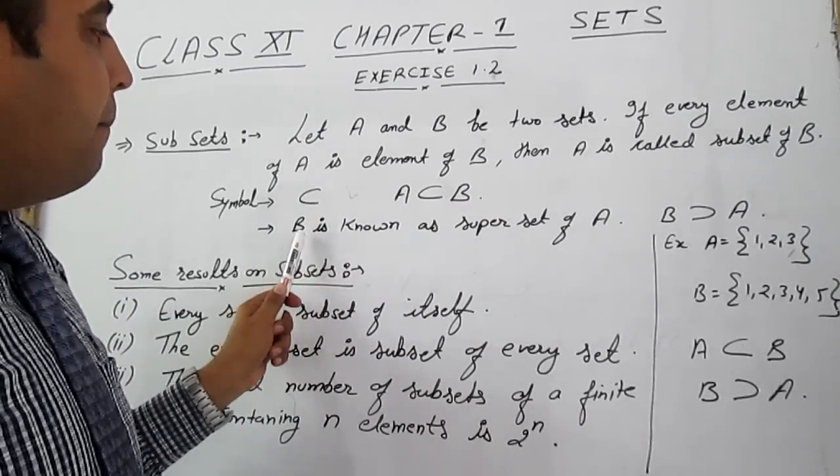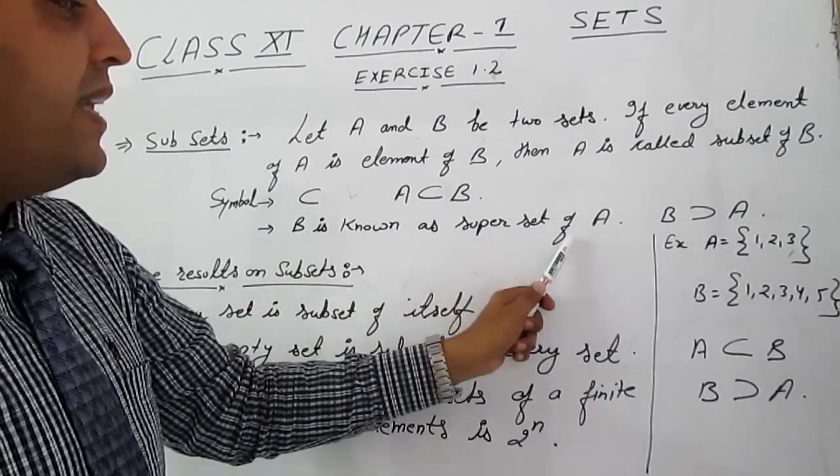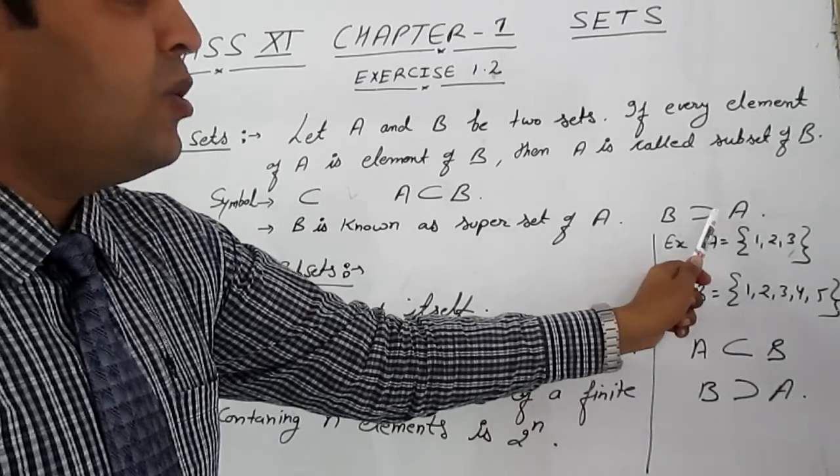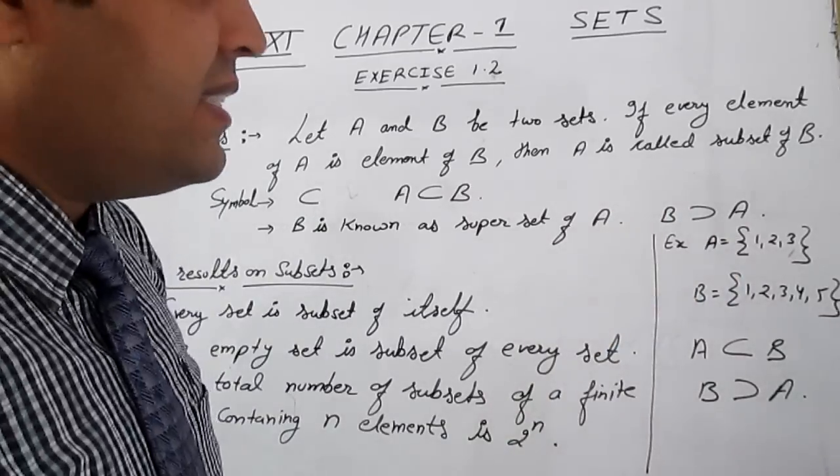In this condition, B is known as superset of A, and it is written B is superset of A. Let us take an example.